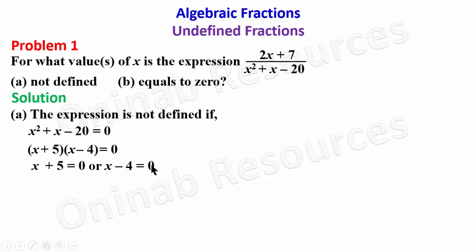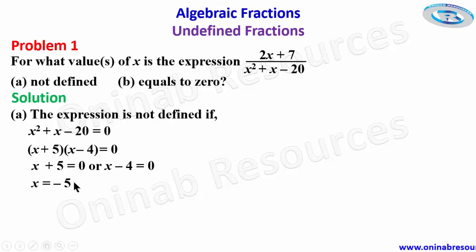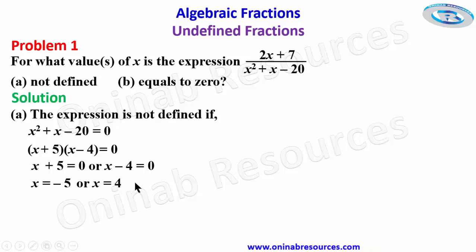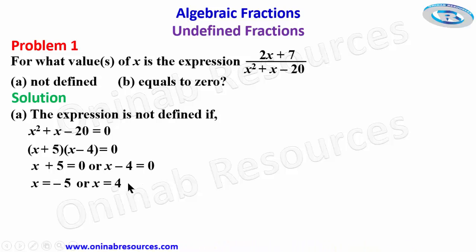Solving the two linear equations, x + 5 = 0 gives x = −5, and x − 4 = 0 gives x = 4. These are the values of x for which this expression is not defined.